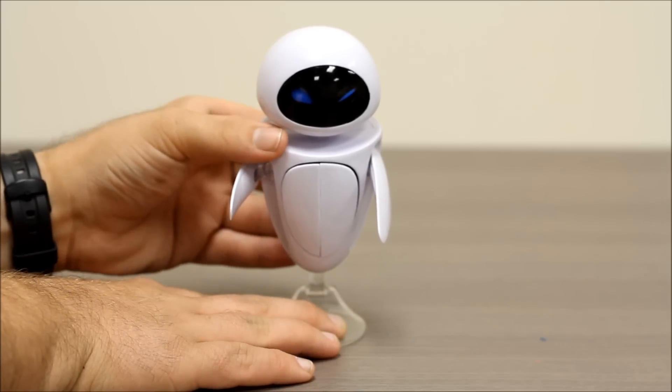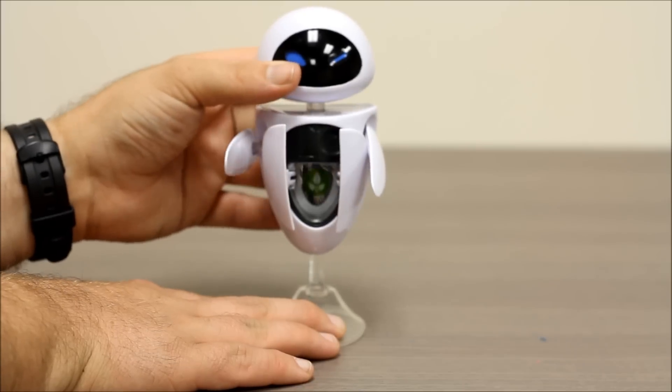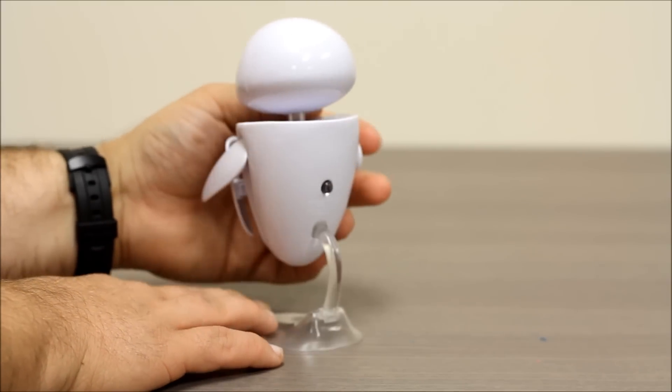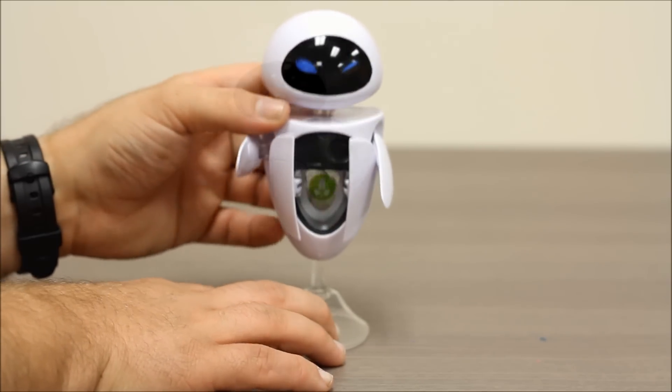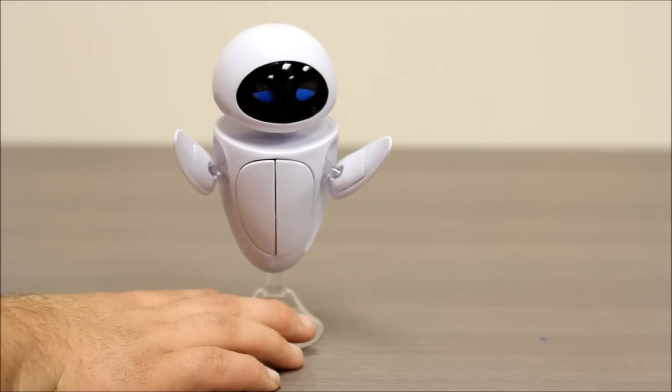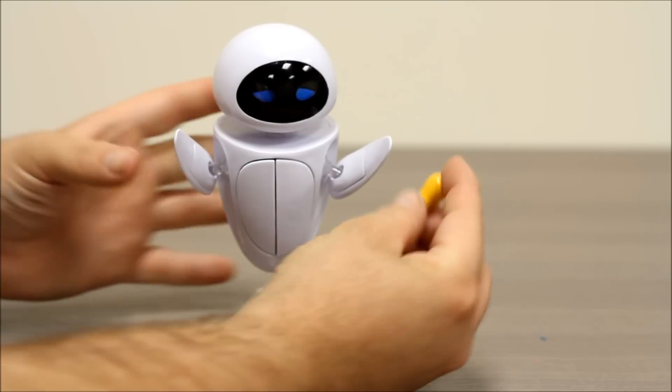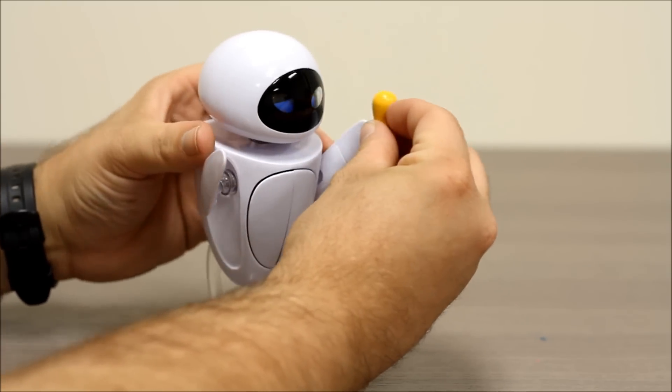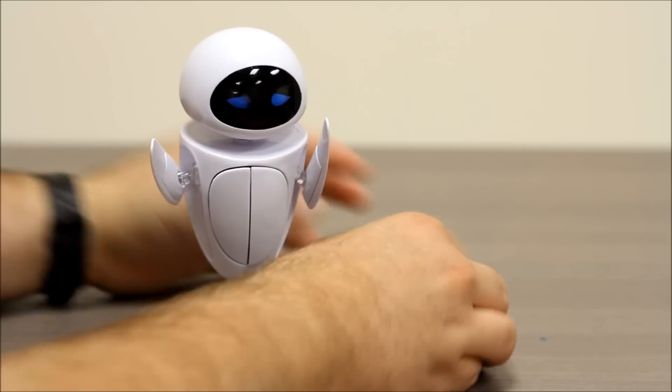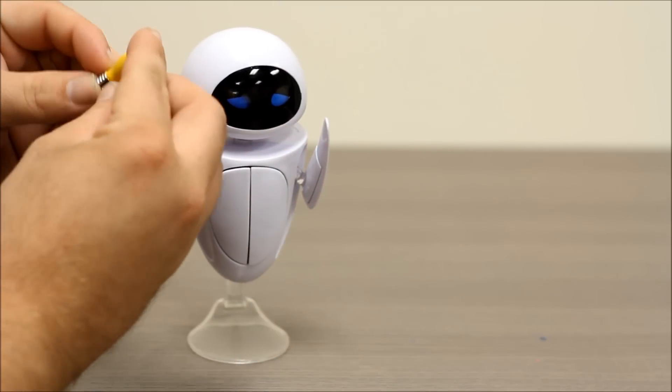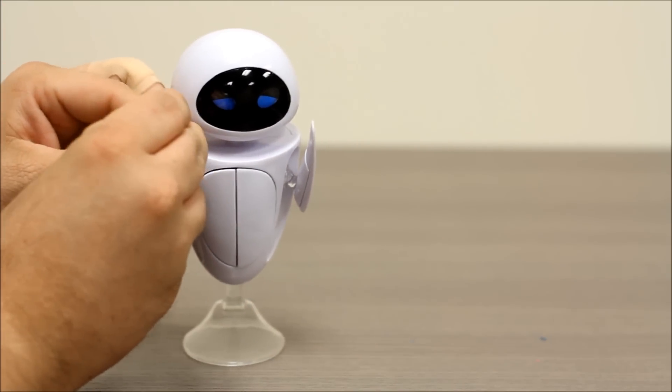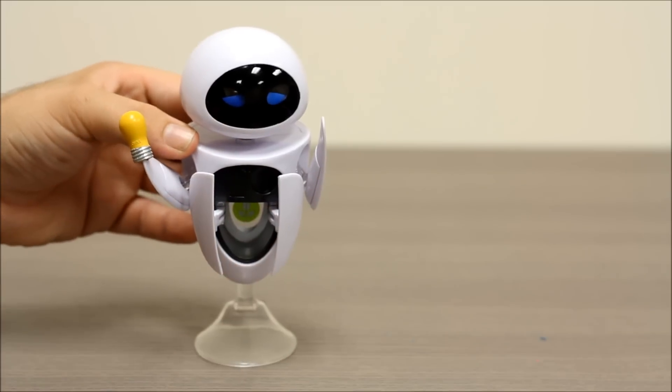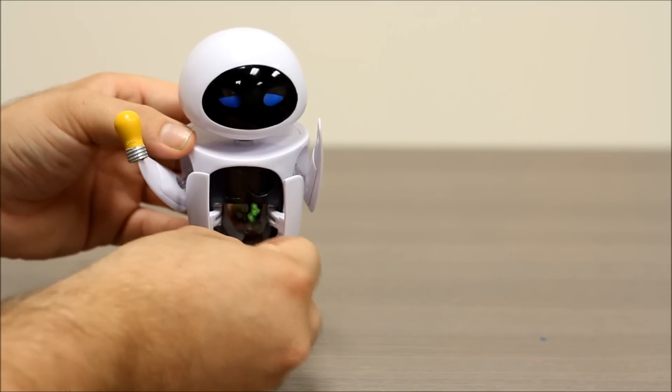She also has her little search mode feature here. And when you press the button on her back, her little hidden compartment opens up. And then some of her accessories can be used. She has a little tiny light bulb that clips on her hand.